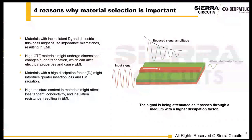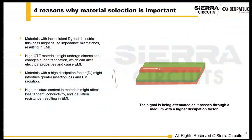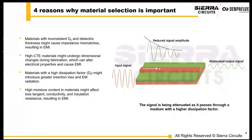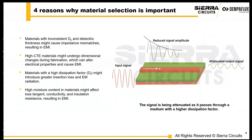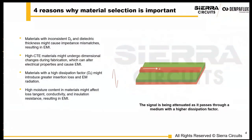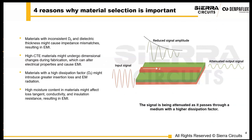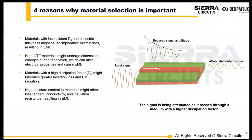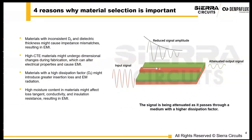Another consideration when choosing material is moisture absorption. High moisture content in the PCB can alter electrical properties such as loss tangent, electrical conductivity, and insulation resistance, and it can basically result in shorts. From a fabricator standpoint, prior to shipping the PCB manufacturer should bake the boards to make sure there's no moisture, especially important for rigid flex. You might also want to consider vacuum packaging to ensure there's no moisture issue over time.